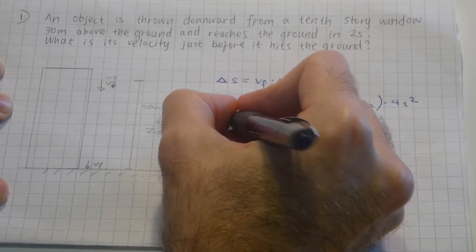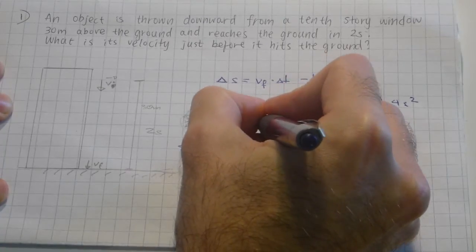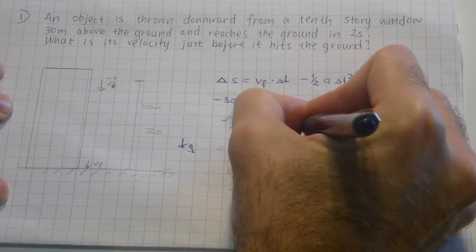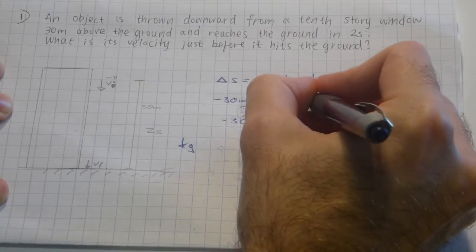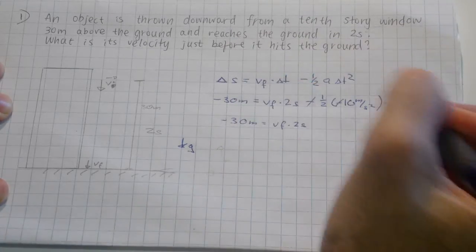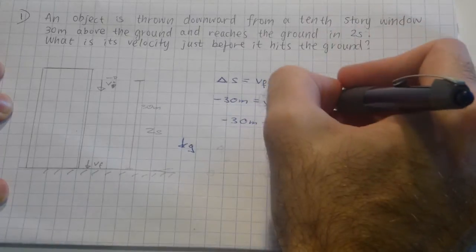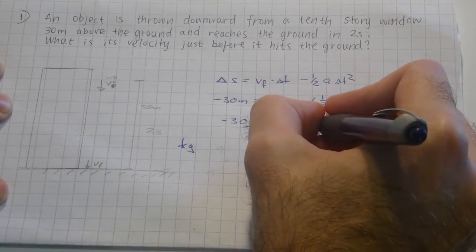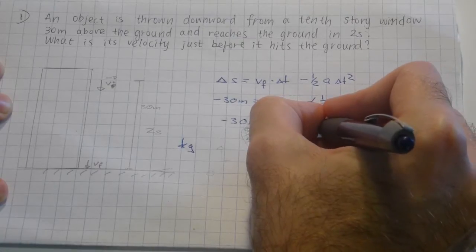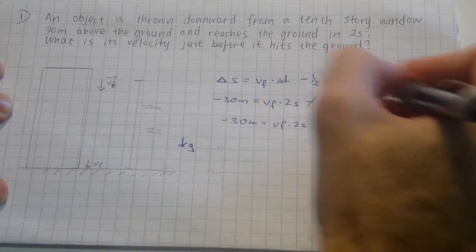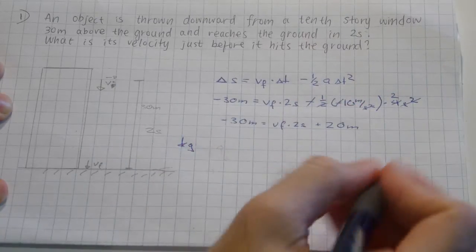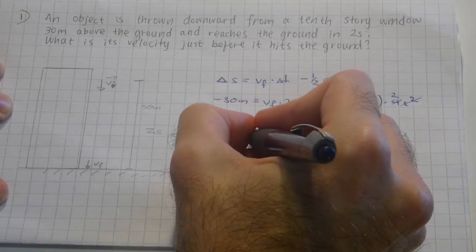Now, minus 30 meters equals v-final times 2 seconds. The minuses go away. You can take away one of the twos, so I get 2v-final plus 20 meters. If I put everything that is meters on one side...